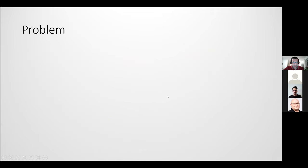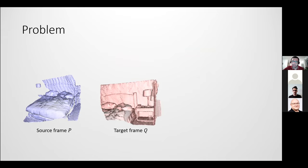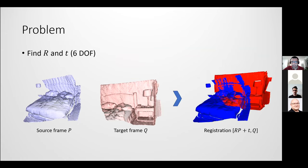Today I'll talk about registration. What is the registration task? Assume we have a source point cloud P and another point cloud or 3D scan Q. Registration means we want to align these two frames or scans. To do this we apply a rigid transformation — a rotation and a translation — to bring frame P to Q. At the end we want to regress and find out this rotation and translation.